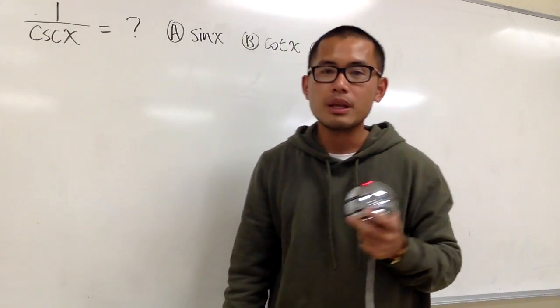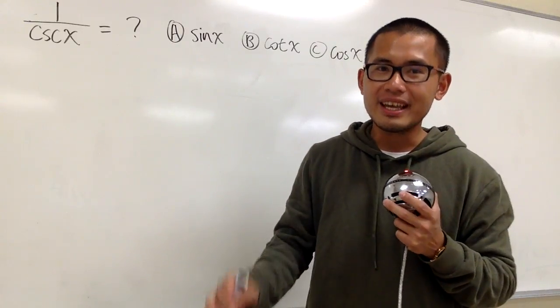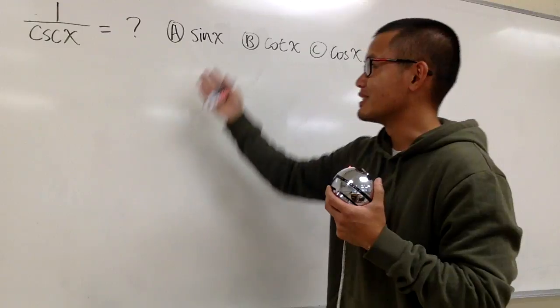Because you know cosecant x is the same as 1 over sine x, and 1 over cosecant x will be just sine x.